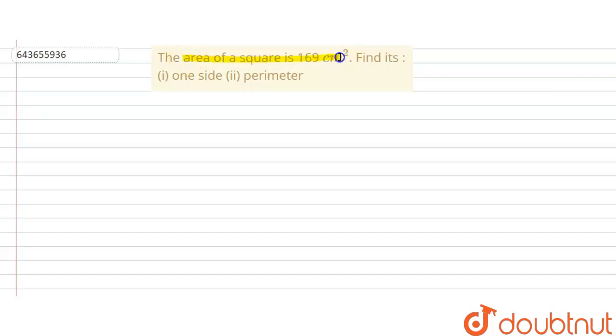The problem is the area of a square is 169 centimeter square. Find its one side and perimeter.